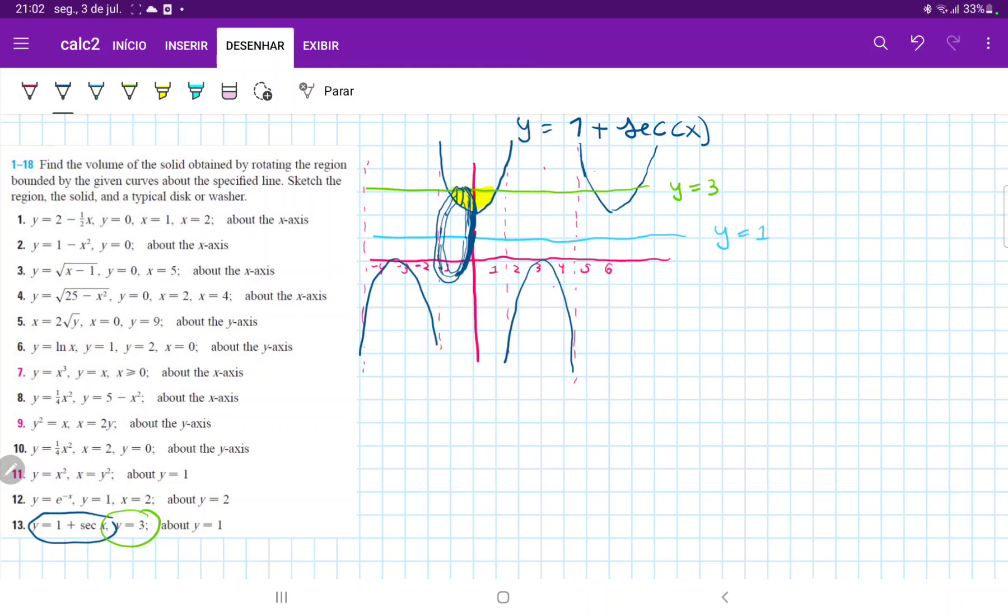And then when we sum up all these disks, they're going to give us a volume. So basically it's telling us to sum up all these disks from this point here, where they intersect first, to this other point.